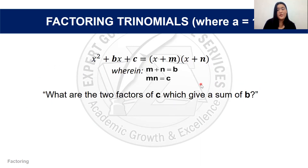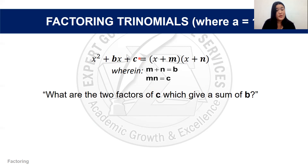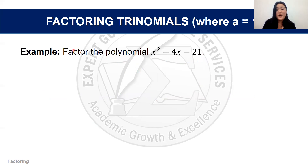The first technique to take note of is when the numerical coefficient of our leading term x² is equal to 1, so a = 1. We need m × n = c and m + n = b. We just answer: what are the two factors of c that give a sum of b? For example, if c = 15 and b = 8, the factors of 15 that sum to 8 are 5 and 3, since 5 + 3 = 8 and 5 × 3 = 15.